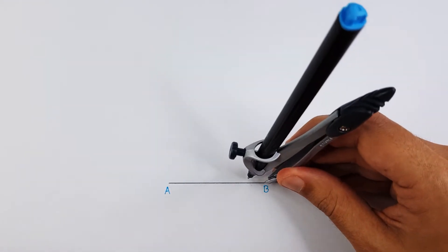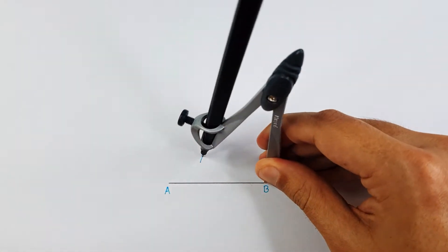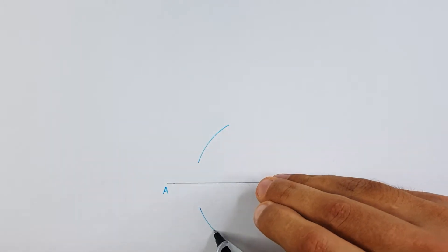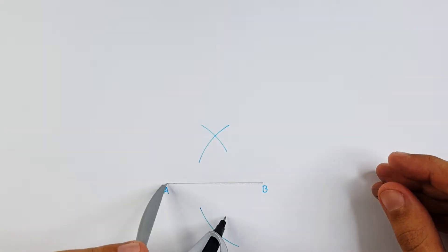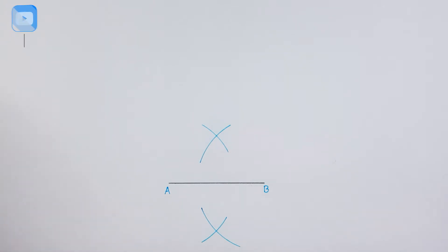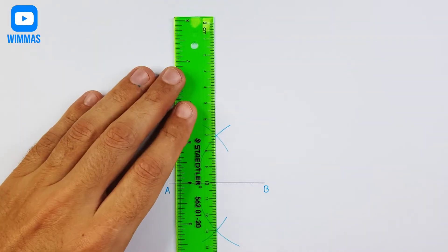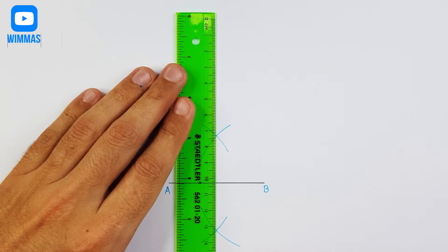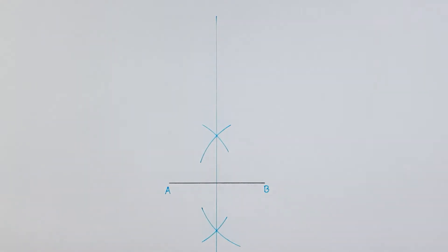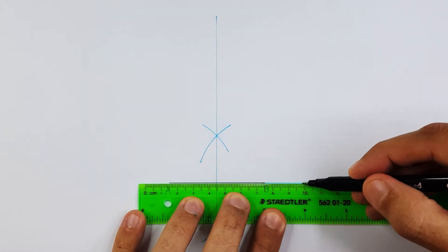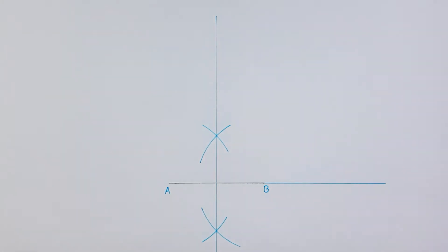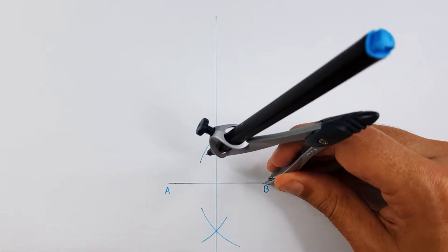Let's get started by applying the middle point method on the given line AB. For the next step, we need to extend line AB towards the right. Apply the perpendicular method on point B.